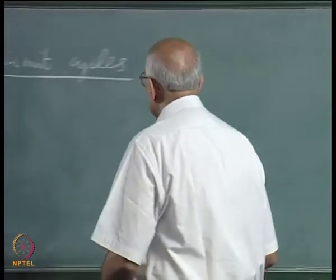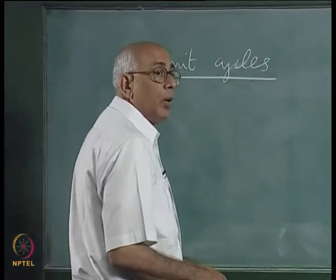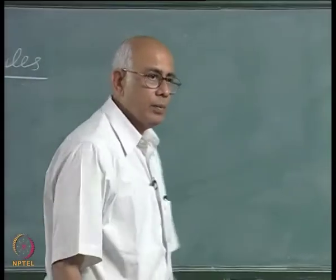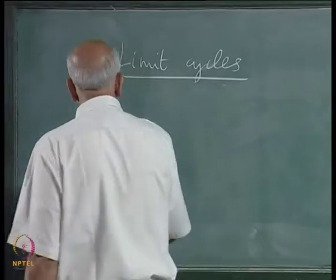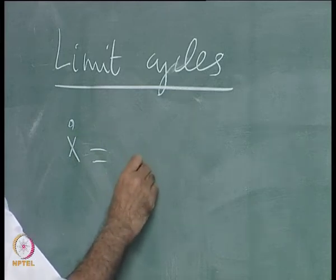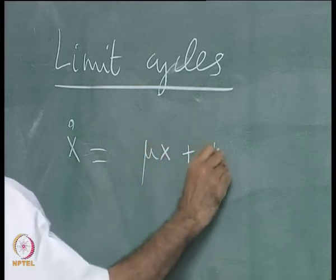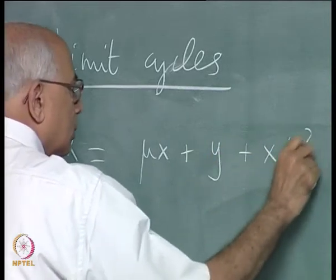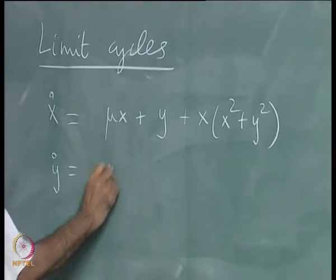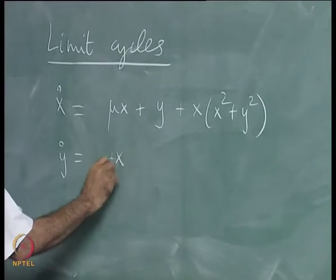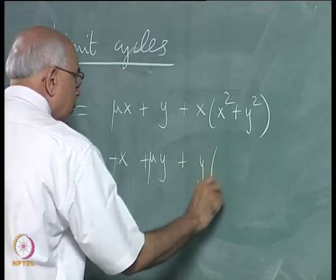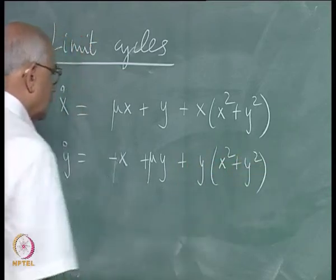Let us consider the possibility of critical points which are like lines, in some sense. I am going to do this with the help of an example, looking at a simple nonlinear system in two degrees of freedom, two dimensions. We look at x-dot equal to mu x plus a y plus x times x squared plus y squared, and y-dot equal to minus y plus mu x plus y times mu, where mu is a real parameter.